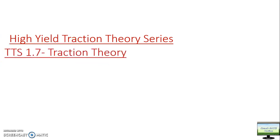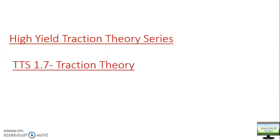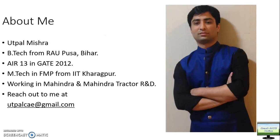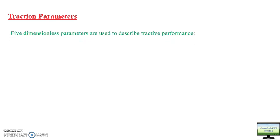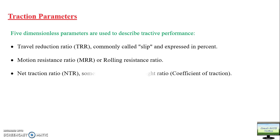Hello friends, hope you all are doing well. This is the next video in the IELTS traction theory series where I will explain some advanced concepts of traction theory. If you have not watched the previous videos, please go back and watch all previous videos continuously before coming here. We were discussing traction parameters — there are five dynamics parameters used to describe tractive performance: slip, motion resistance ratio, and net traction ratio.